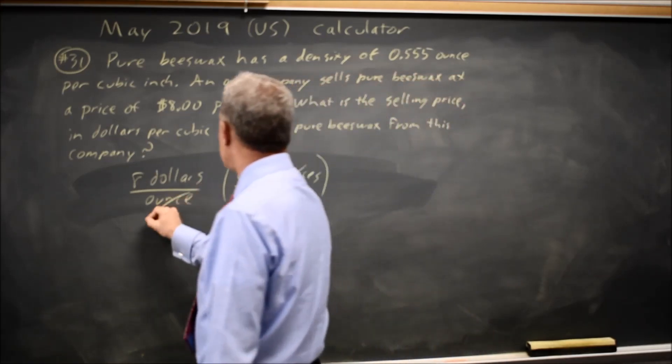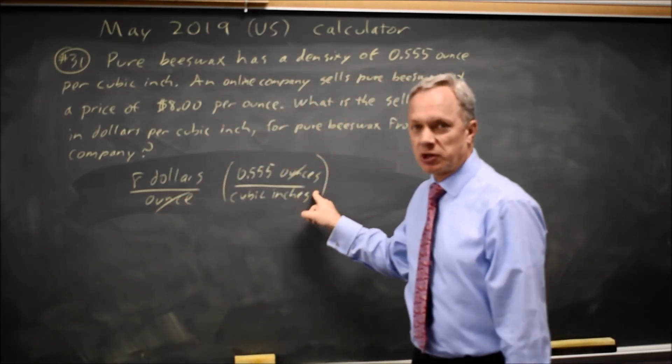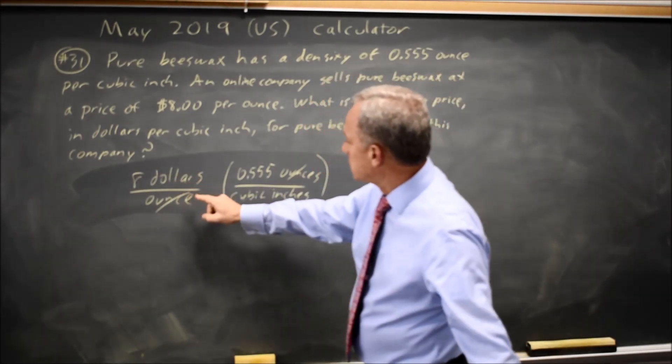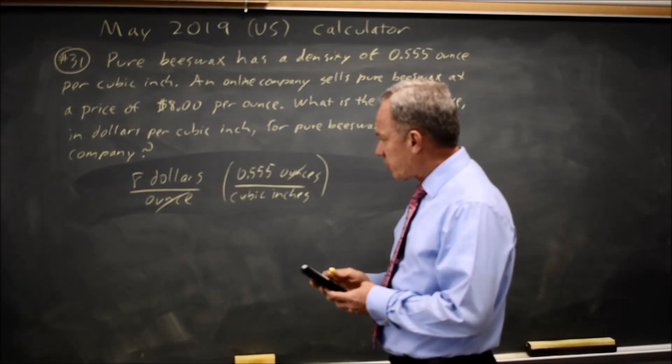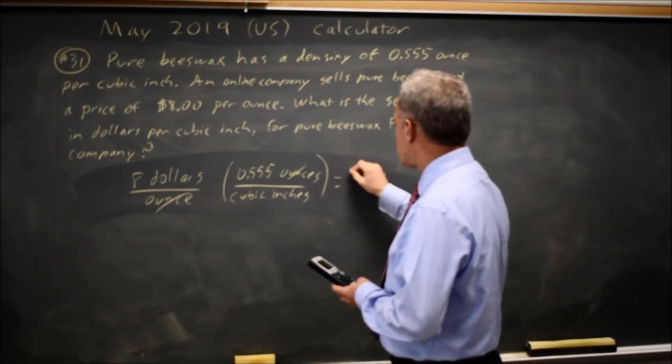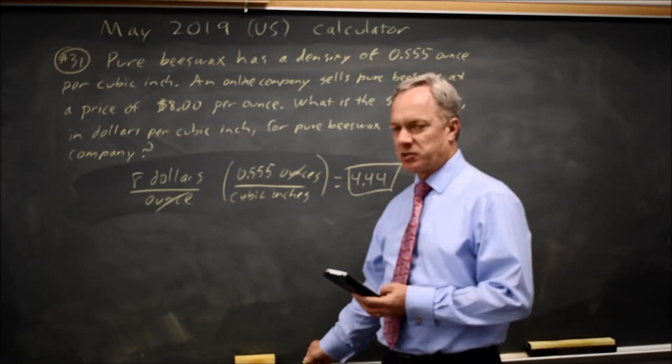the ounces will cancel. I multiply by something equal to one because they told us those are equal, and so I'm left with dollars per cubic inch is eight times 0.555, which is 4.44 dollars per cubic inch, which is what College Board asked for.